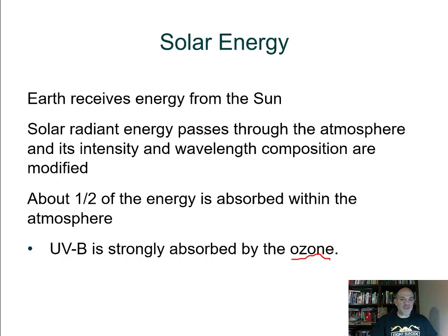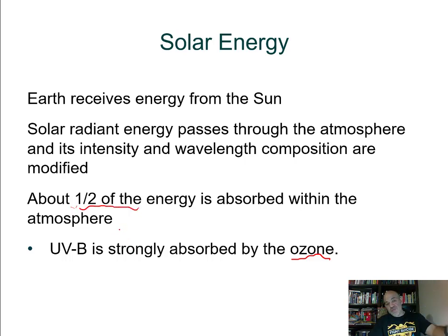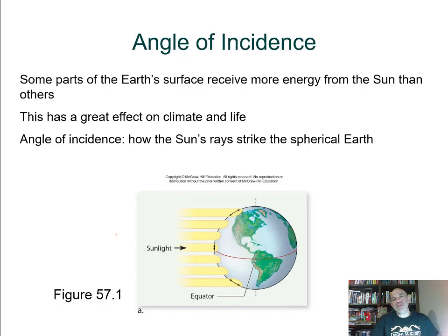Once radiant energy hits our atmosphere, it passes through it. The wavelengths can change, the angle at which they come in changes, and the atmosphere can absorb some of that energy — about half. Other energy is absorbed by the hydrosphere, water, and land. An important factor in how much energy reaches the planet's surface depends on where you are on the Earth. The most direct sunlight occurs around the equator, generally between the tropics of Cancer and Capricorn.